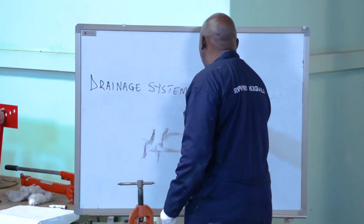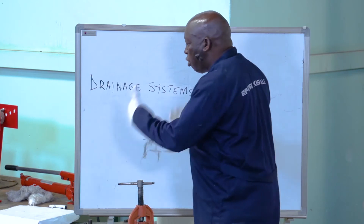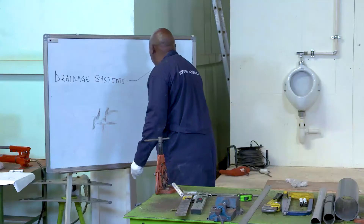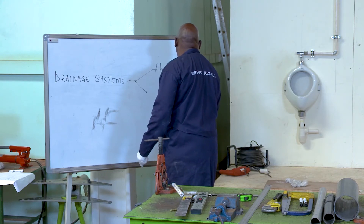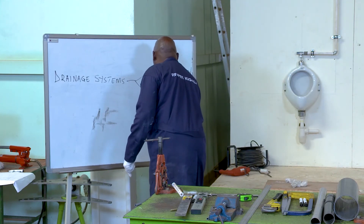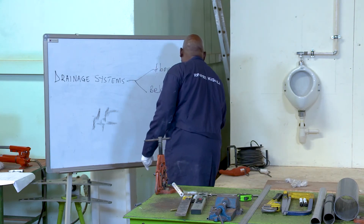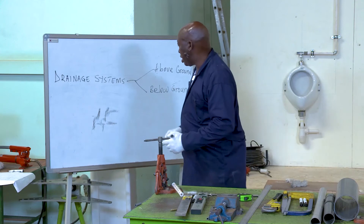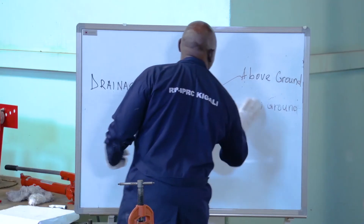As plumbing students, this should not be the first time you are hearing about drainage systems. A drainage system is an arrangement of pipework to remove wastewater and waste matter from the sanitary appliances we have seen. Drainage systems are divided into two: above-ground drainage systems and below-ground drainage systems. Today we are dealing with the first one — above-ground drainage.